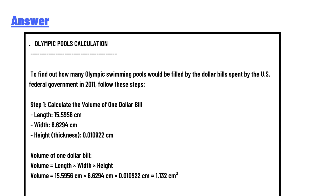Volume of one dollar bill equals length multiplied by width multiplied by height. Volume equals 15.5956 centimeters multiplied by 6.6294 centimeters multiplied by 0.010922 centimeters, which equals approximately 1.132 cubic centimeters.